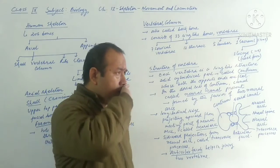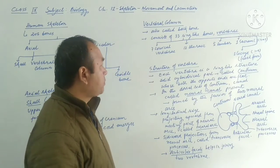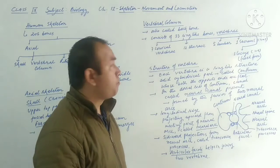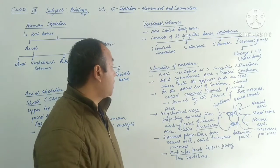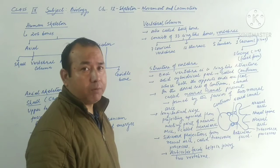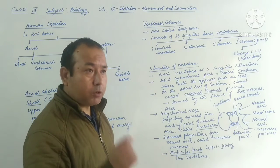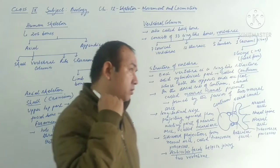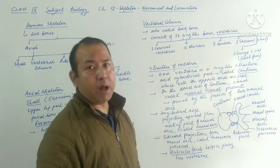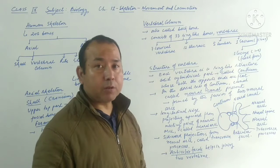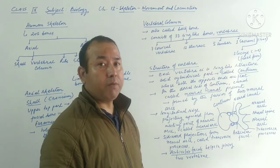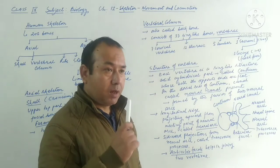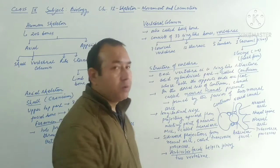The vertebral column can be categorized into five different groups, starting from the neck region up to the tail region. The neck consists of about seven cervical vertebrae — those vertebrae present in the cervical, that is the neck, region. Interestingly, even the giraffe, though its neck is quite long, also has seven cervical vertebrae — the same number as humans.